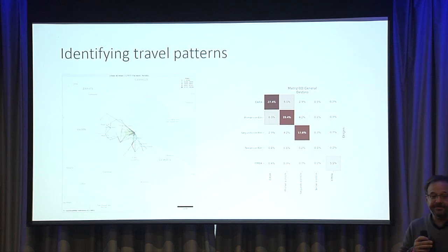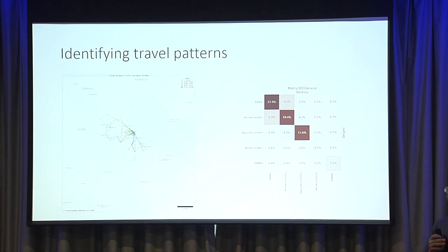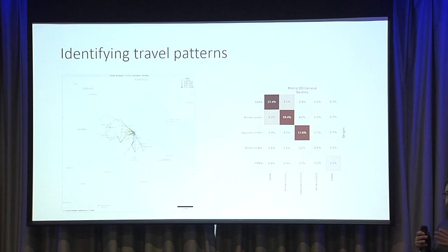Once we have this processed dataset, we can create origin-destination matrices and visualize them. You can provide a shapefile with different zone types, and the system will create matrices based on those zones. If you don't provide anything, the system will propose a zonification based on the data. You can also provide as many zonifications as you want. These matrices are a way to plan for better public transit systems.